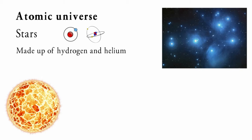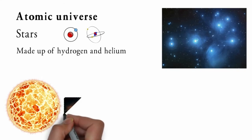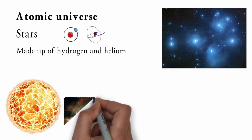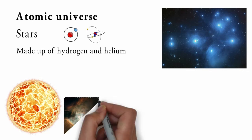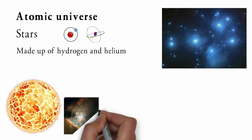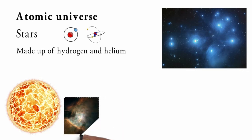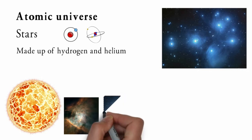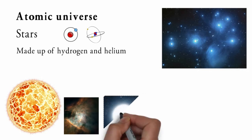The outer layers of the star expand outwards, making the star 100 times bigger, and it is called a red giant. A medium-sized star will shed its outer layers into space, forming a gas cloud called a nebula, whereas the core will shrink and cool, leaving behind a hot ball called a white dwarf.